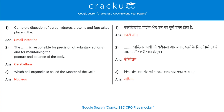Today's first question: complete digestion of carbohydrates, proteins and fats takes place in the small intestine. The dash is responsible for precision of voluntary actions and for maintaining the posture and balance of the body — Cerebellum.